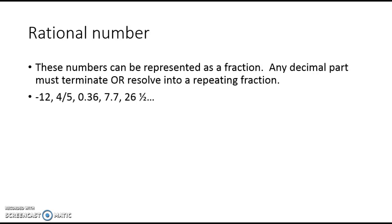A rational number are numbers that can be represented as a fraction or a decimal, but the decimal part must terminate or resolve into a repeating fraction. So like negative 12, 4 fifths, 0.333—if it repeats forever that's okay, that is still a rational number because it's a repeating number.